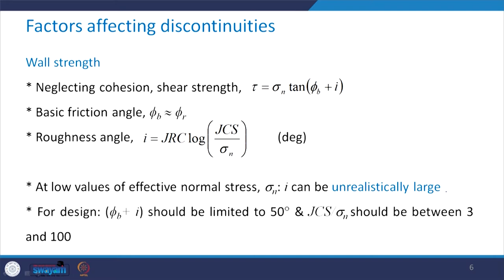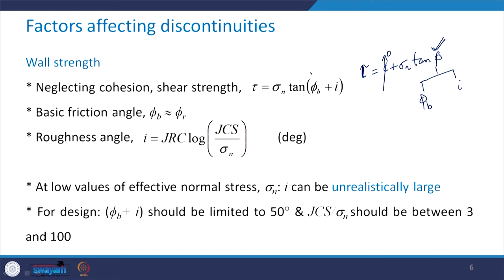If we neglect the cohesion, the shear strength can be given by: tau = sigma_n × tan(phi_B + I). You know that if a material follows the Mohr-Coulomb criteria, shear strength is given as tau = C + sigma_n × tan(phi). If you neglect the cohesion, that term becomes zero. Since here the friction characteristic has two parts — phi_B and I — both are contributing towards the shear strength, giving us this expression.